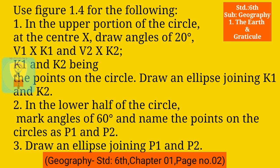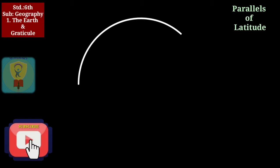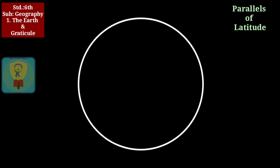In the lower half of the circle, mark angles of 60 degrees and name the points on the circle as P1 and P2. Draw an ellipse joining P1 and P2. After the activity you have to answer some of the questions given below the diagram. We will do the activity considering these steps.